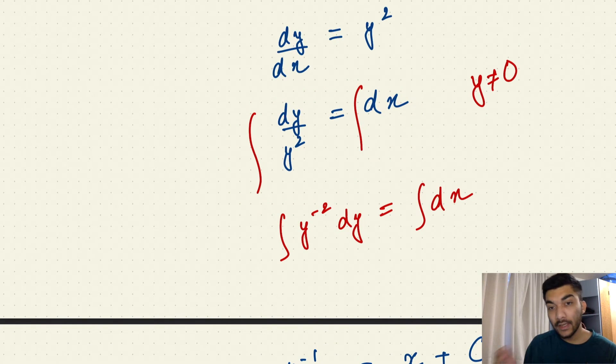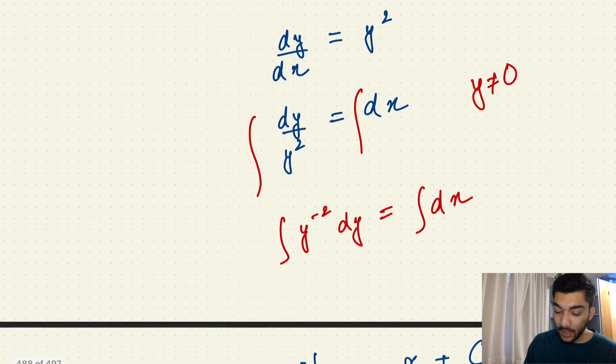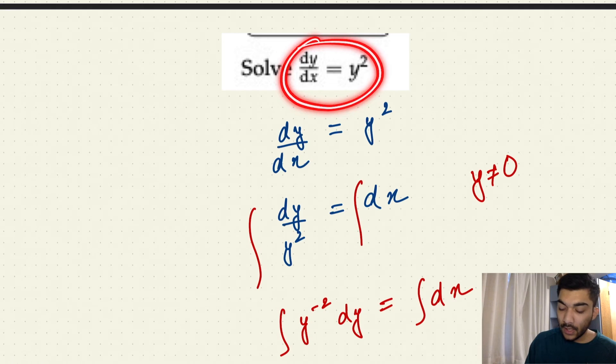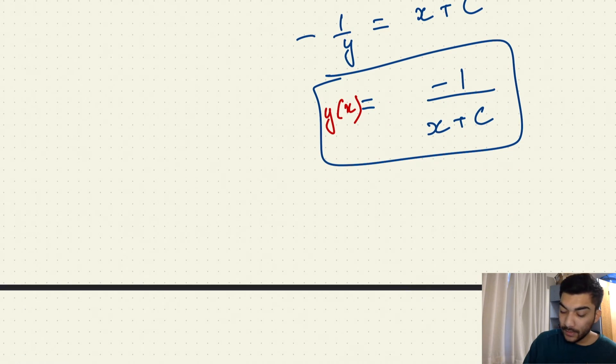And you can also add it at the end that the answer to this separable differential equation is this expression where your y is never equal to 0. So your y of x is never equal to 0.